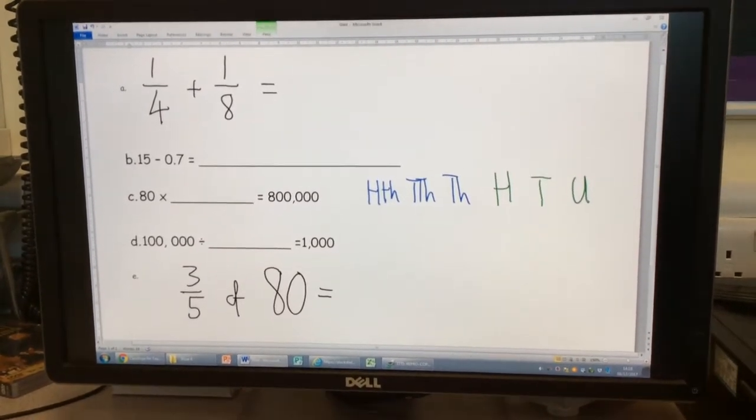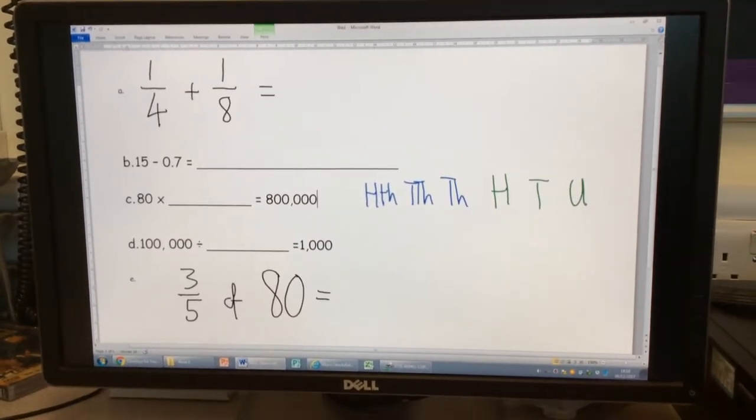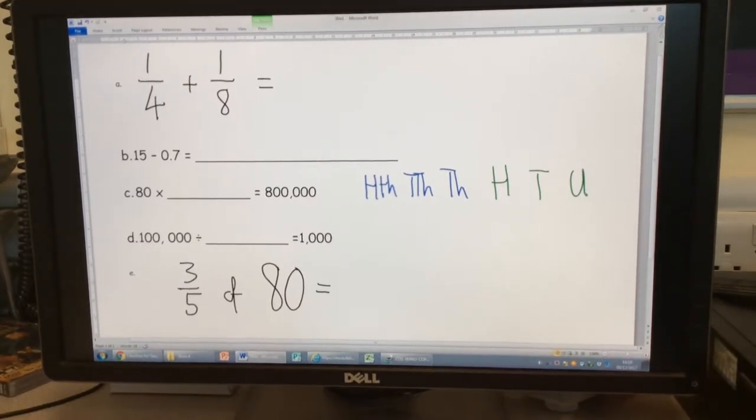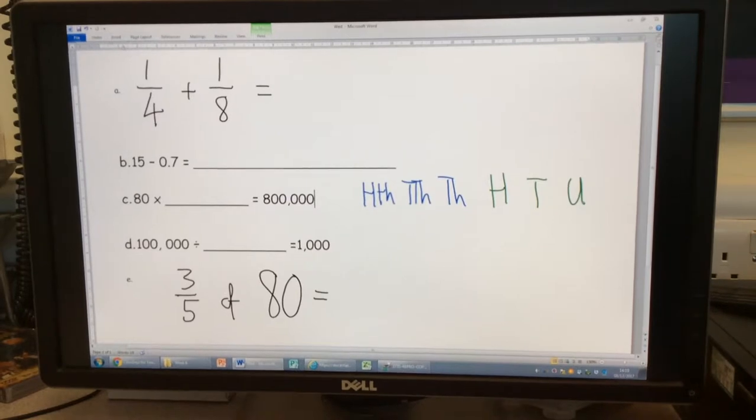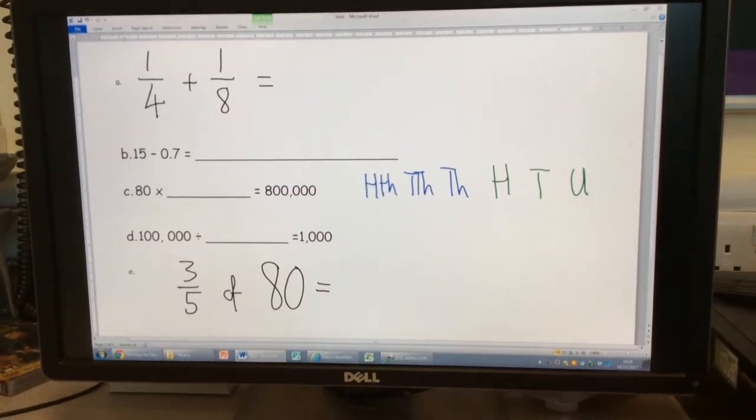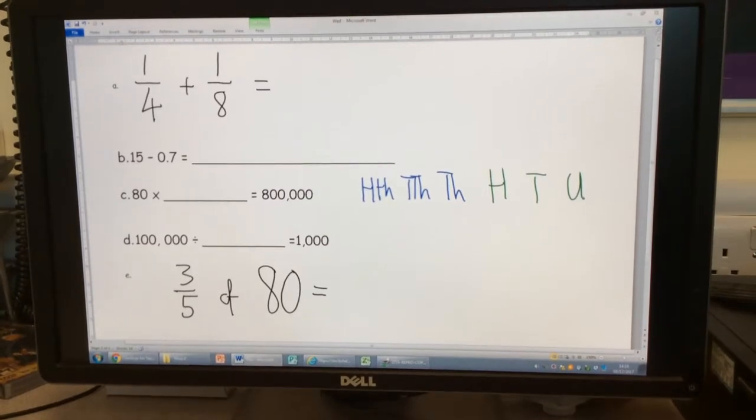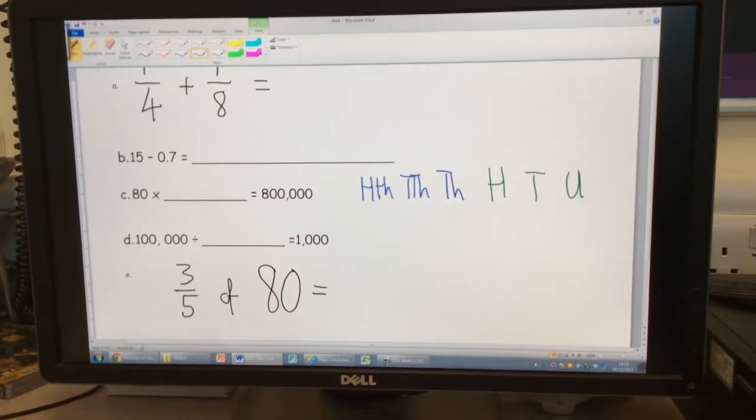Who can tell me how we're going to work this one out? Katie, what are we going to do? We convert the denominator. Can you give me a bit more information there, Katie? To make them the same. We need to make the denominators the same.